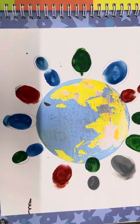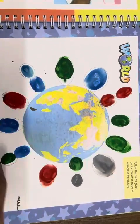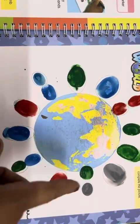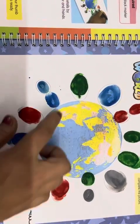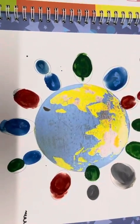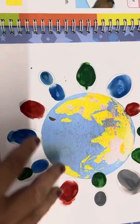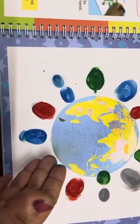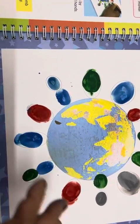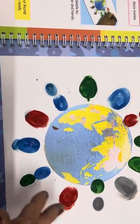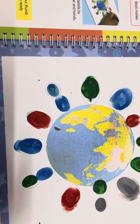Good morning students. In last video we have given the thumb impression of different color on different size of circles. Now after that we have made them to let it dry for few minutes. That's why I am continuing in the next video.